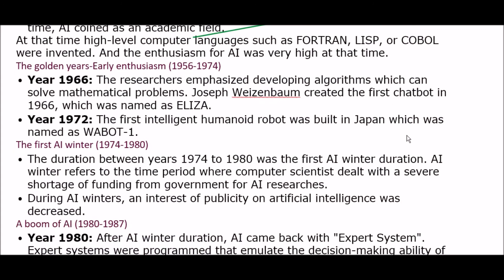The next phase is the golden years of artificial intelligence, the era of early enthusiasm, from 1956 to 1974. In 1966, researchers emphasized developing algorithms to solve mathematical problems. Joseph Weizenbaum created the first chatbot in 1966, named ELIZA. In 1972, the first intelligent humanoid robot was built in Japan, named WABOT-1.